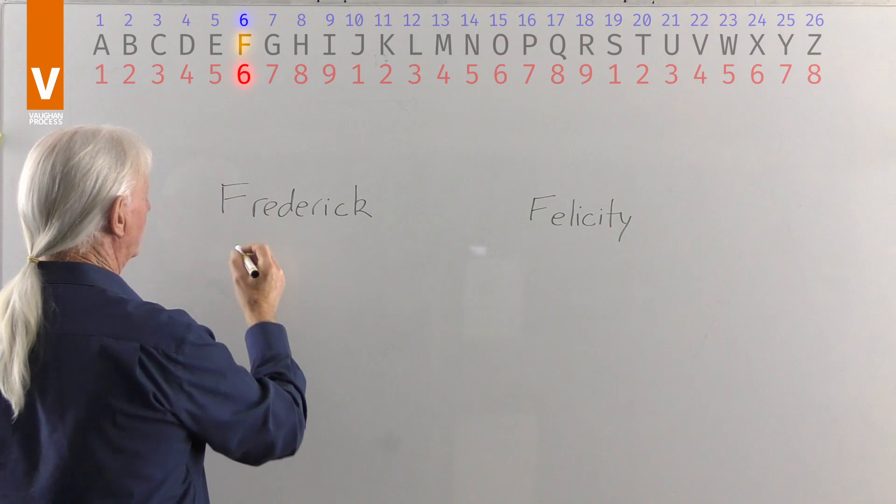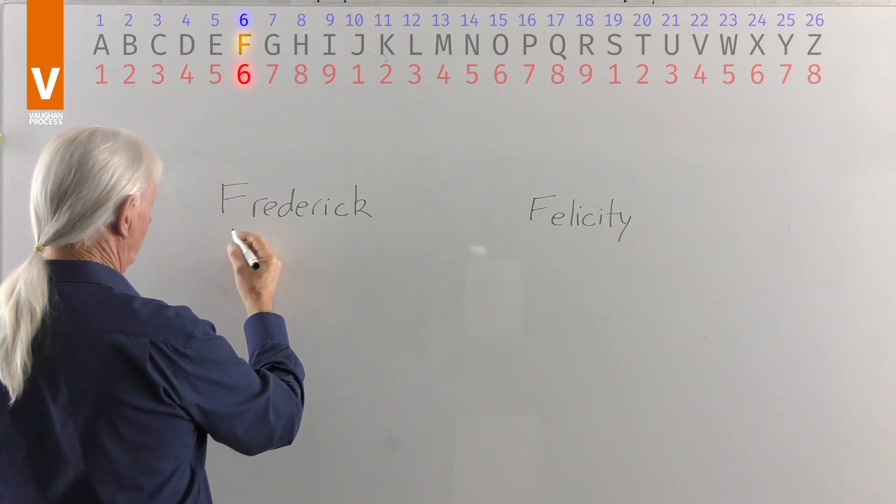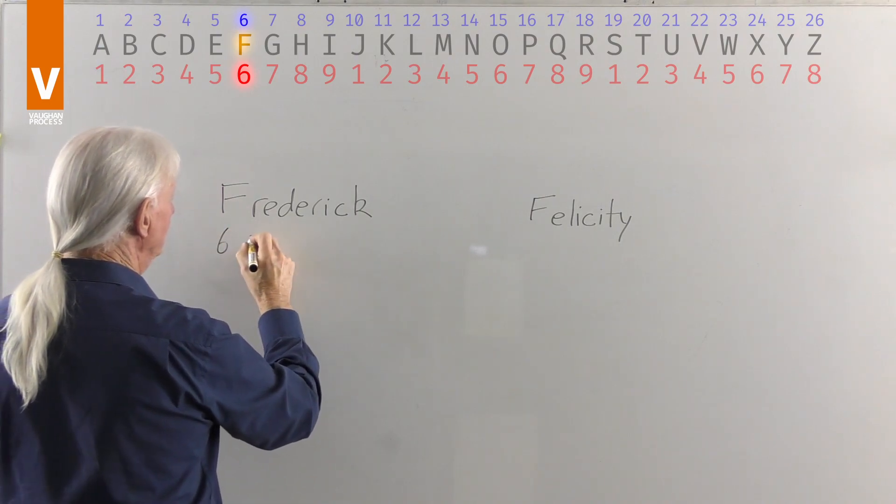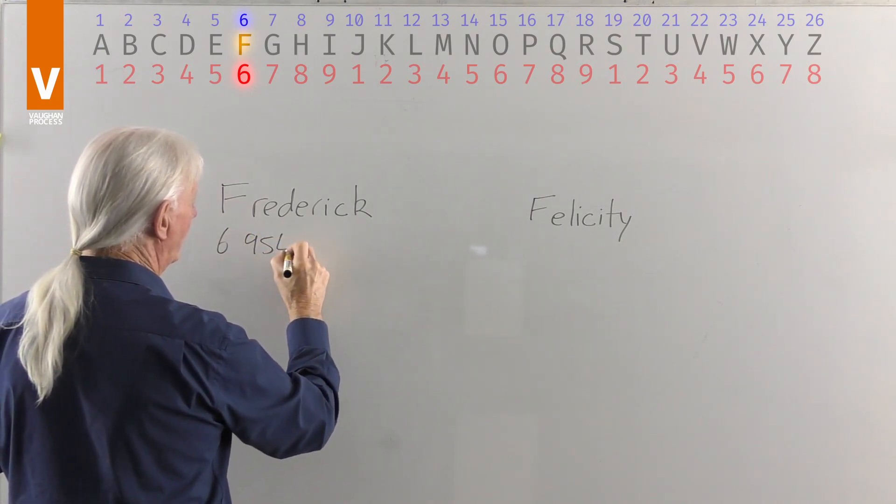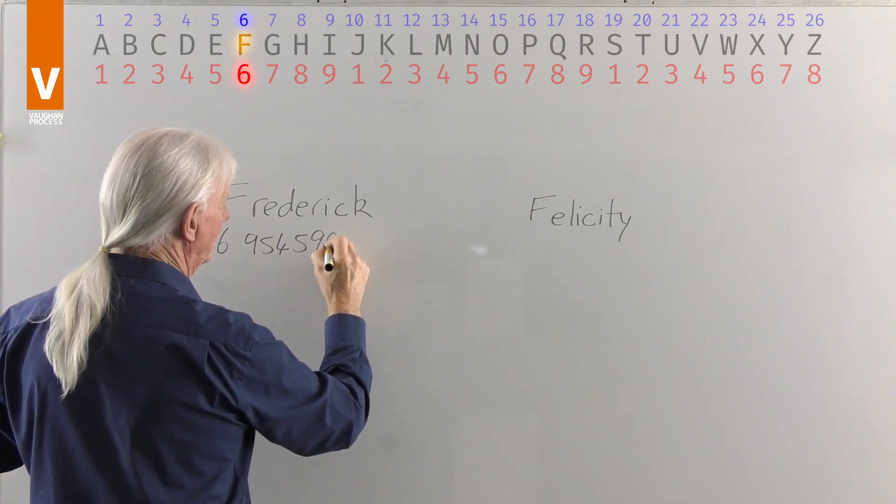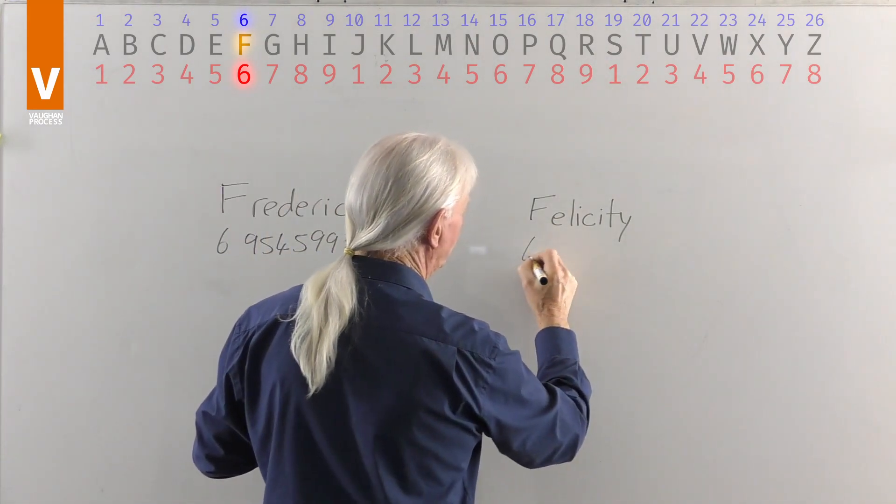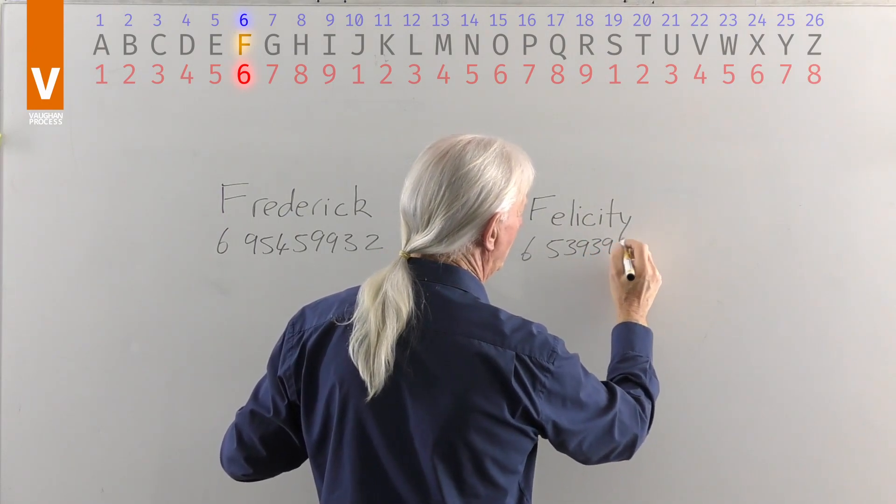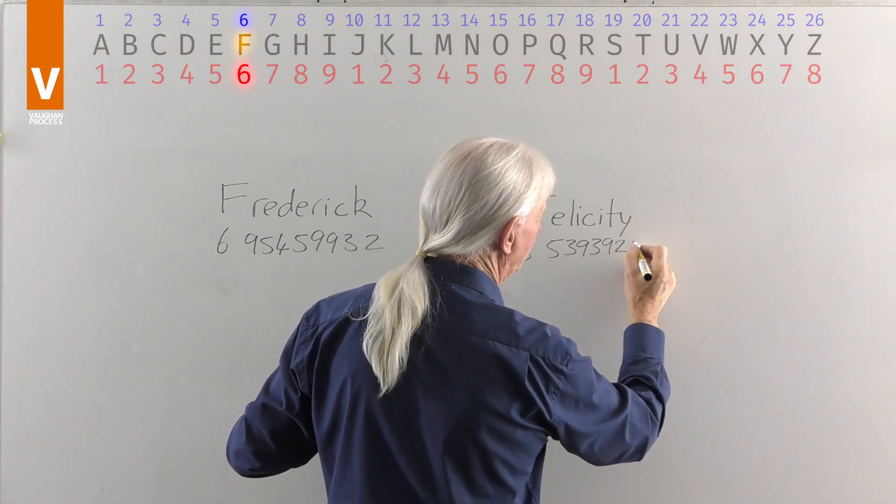So with Frederick then, we're going to put the numbers under each of the letters: 6, 9, 5, 4, 5, 9, 9, 3, and 2 for F-R-E-D-E-R-I-C-K. And for Felicity: 6, 5, 3, 9, 3, 9, 2, and 7.